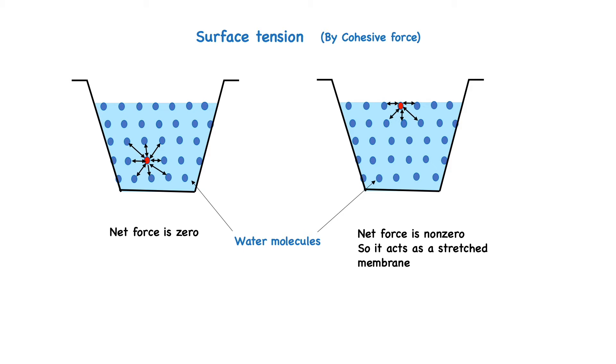Let's understand this more easily. Here we have two containers. In the first container, the inner molecule of the water is pulled by its surrounding molecules, so the net force is zero. But in the second container, the surface molecule of the water is pulled by only the side and the inner molecules. It is also pulled downwards, so the net force is non-zero and the surface area acts as a stretched membrane.